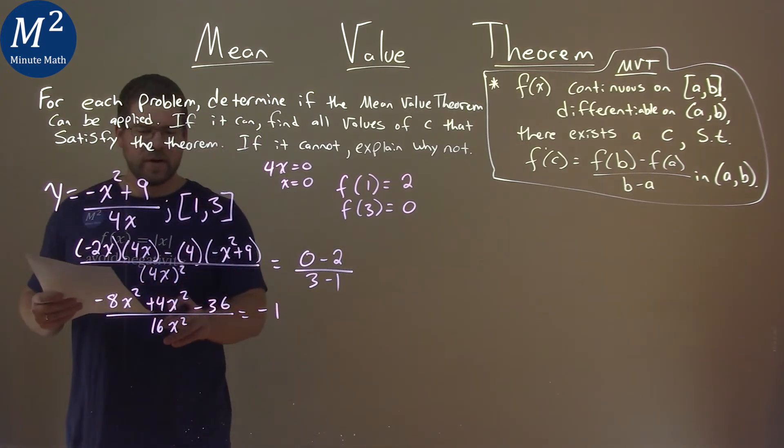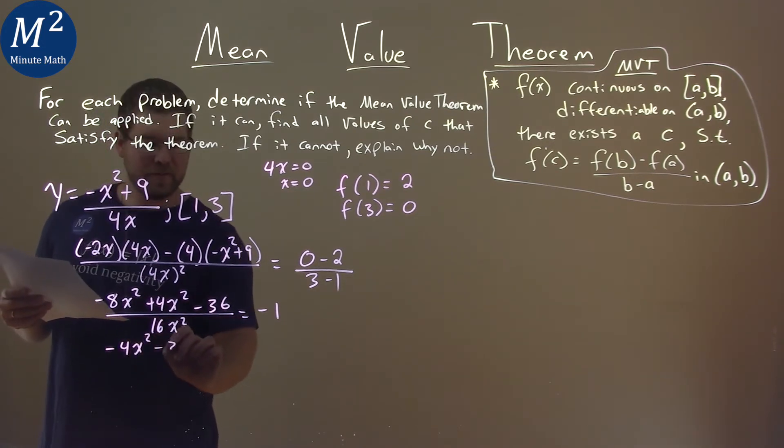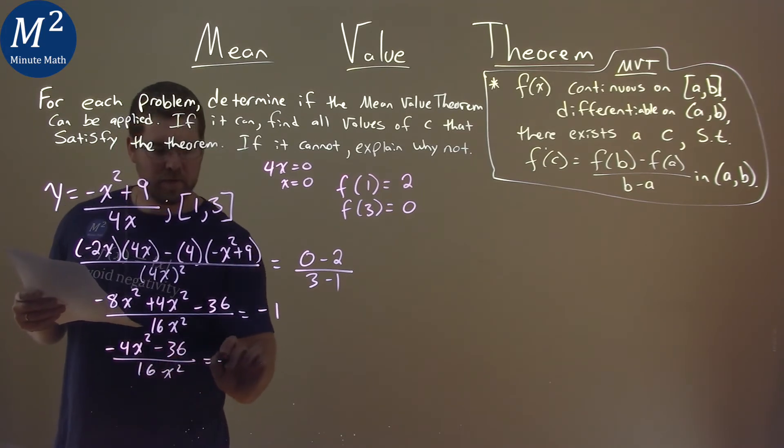Now what we're going to do is simplify a little more here. Negative 8x squared and 4x squared is negative 4x squared, minus 36, and that's over 16x squared equal to negative 1.